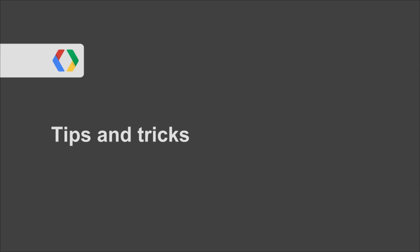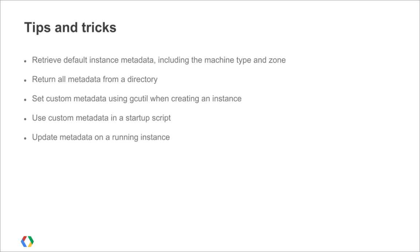Now that you have an understanding of the metadata server, let's take a look at how to use it. Throughout the remainder of this video, I will show you how to retrieve default instance metadata including the machine type and zone, return all metadata from a directory, set custom metadata using gcutil when creating an instance, use custom metadata in a startup script, and update metadata on a running instance.